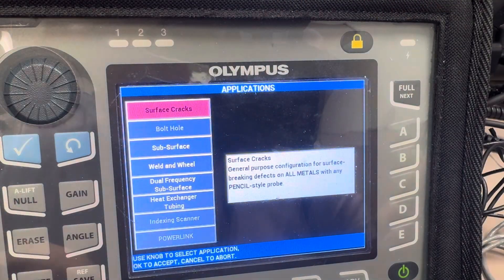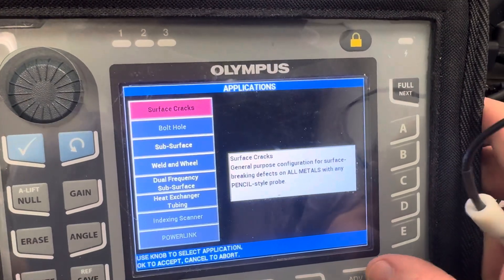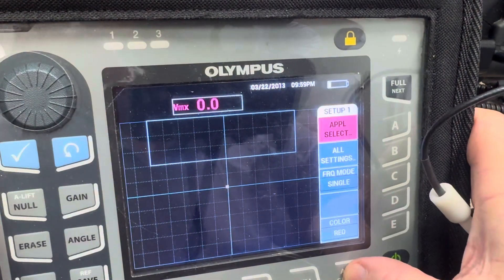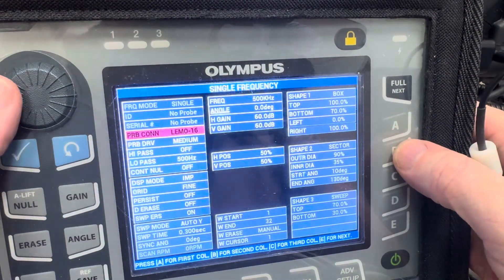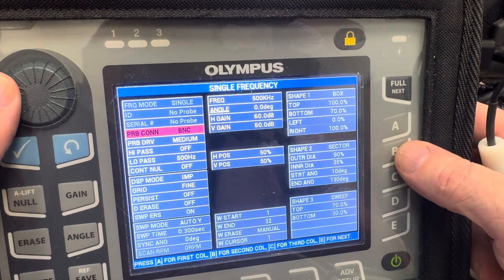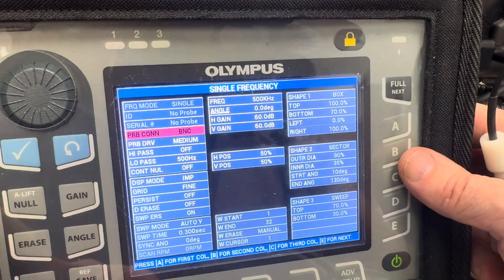Now we're going to do a setup here. Let me see, go to all settings, surface cracks advanced setup. You got to go in here and select BNC, okay check. We'll go to the main.